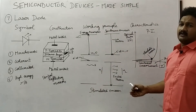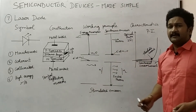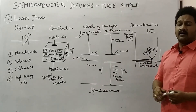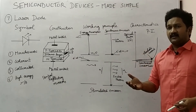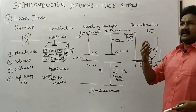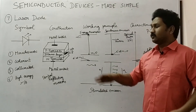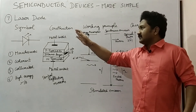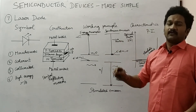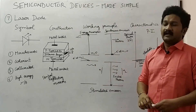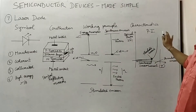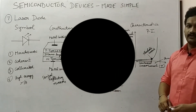Laser beams are used in various purposes such as in surgeries or cutting heavy metals in industries. This is the working principle of a laser diode and the P-I characteristics, which is very important to take note of. Thank you.